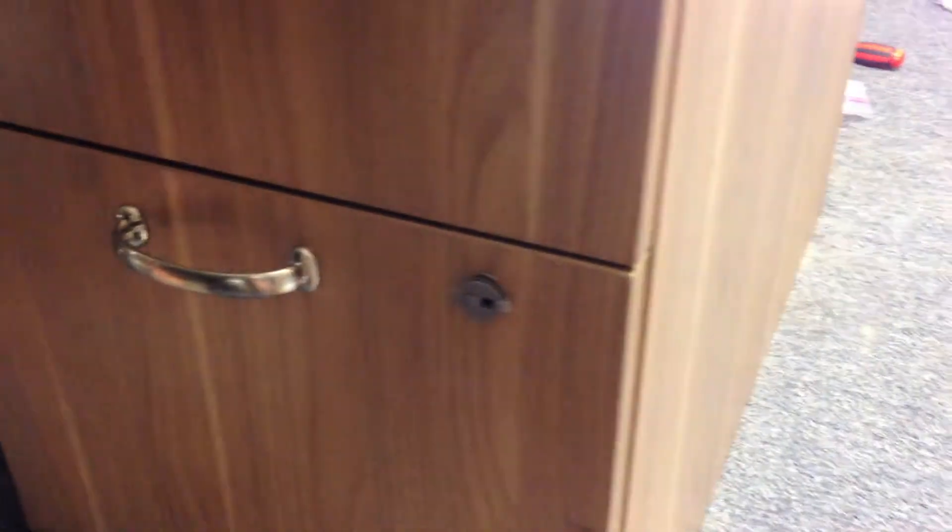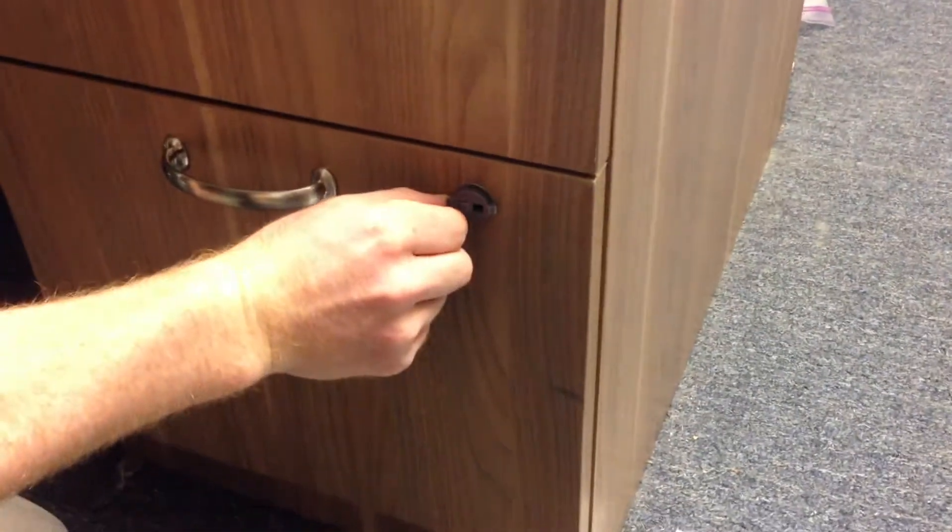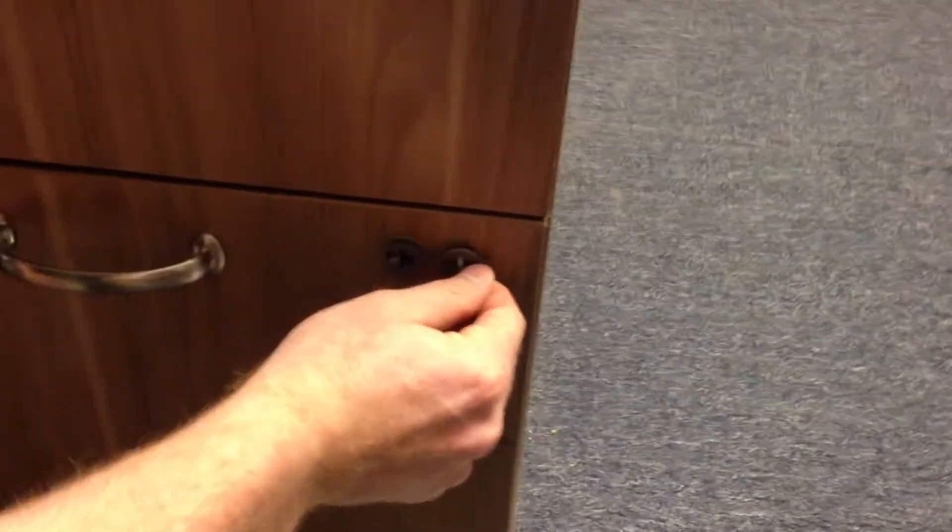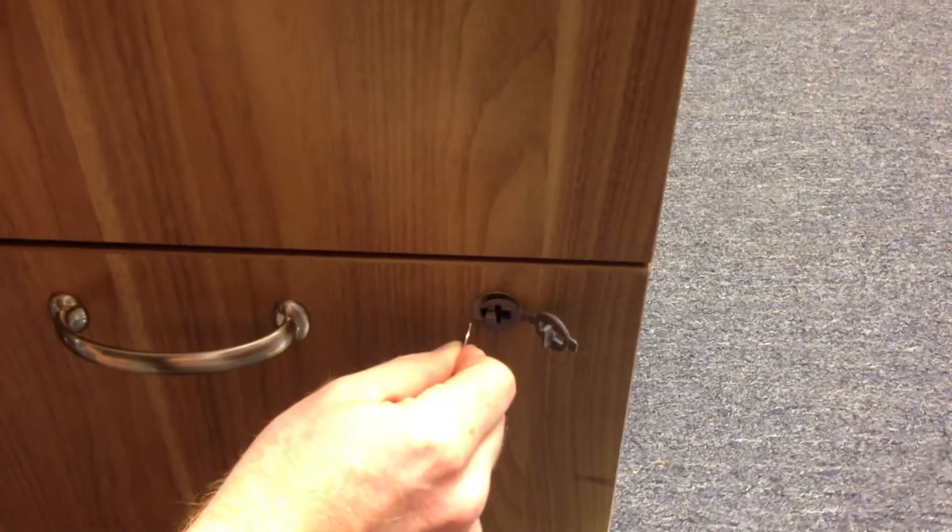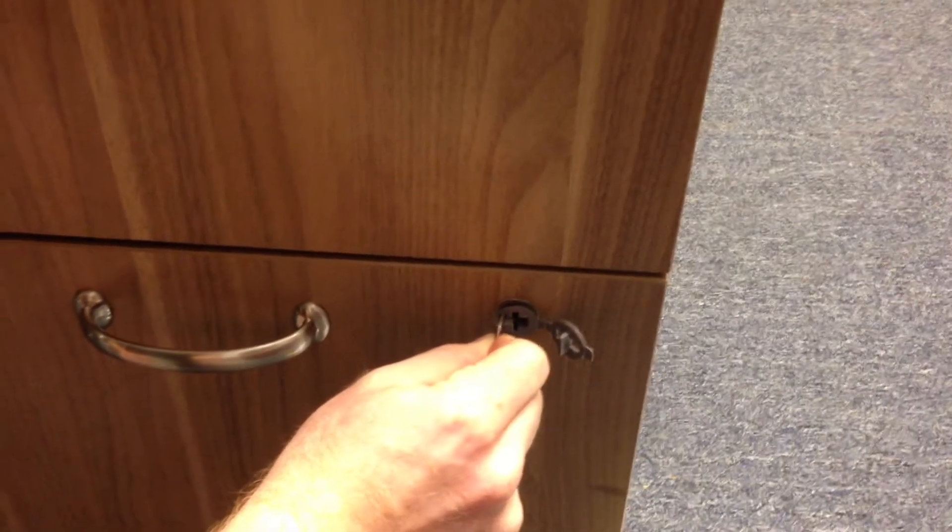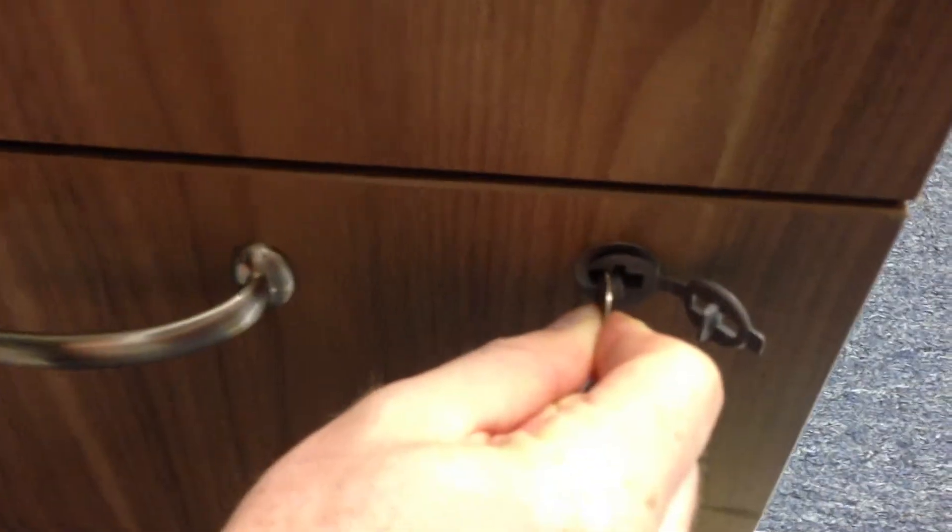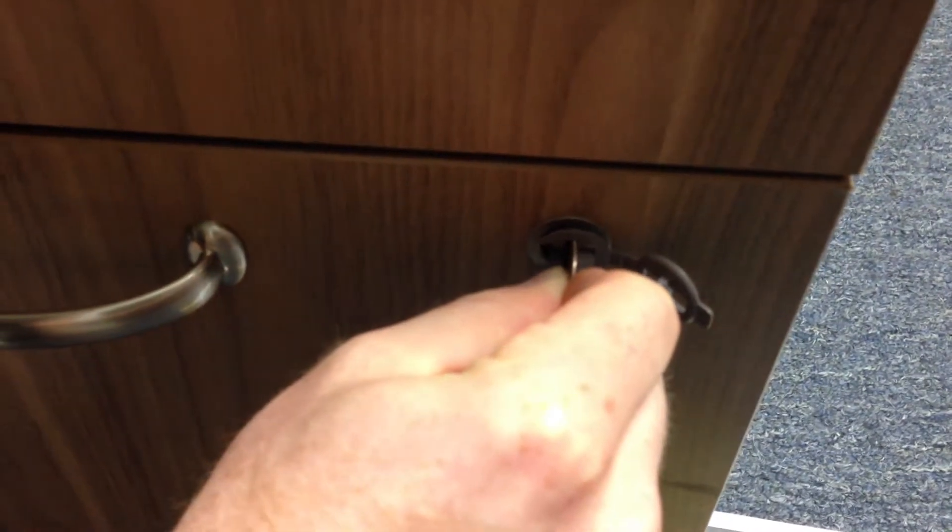Step one, you're going to just open this little door. It recommends using a dime. You put a dime in here from the left side, push this tab over, and then there's the slot. You turn clockwise. Now the drawer comes free.